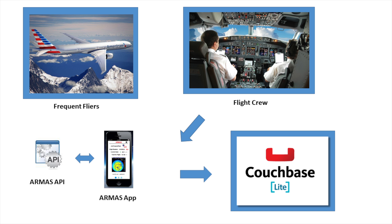The Armis app and Couchbase Lite are also used on domestic and international flights by frequent flyers and flight crews. The extensive library of current NASA space weather information is available via the Armis API when real-time sensor data is not available. During certain conditions, a coast-to-coast airline flight, for example, could be the equivalent ionizing dosage of a chest X-ray, and Couchbase makes it possible to track and analyze this information.